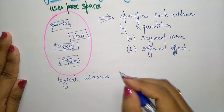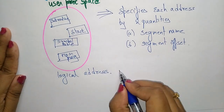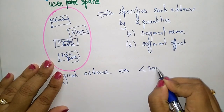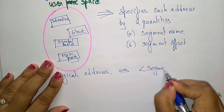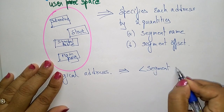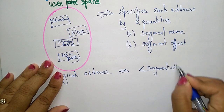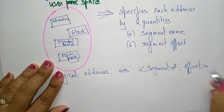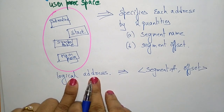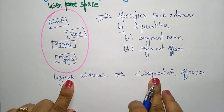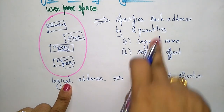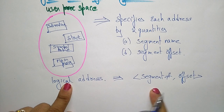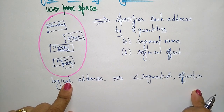So this logical address contains tuples like: segment name and the offset. The logical address consists of these two quantities — that is, the segment name and the offset.